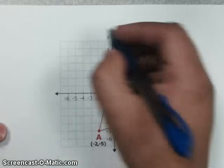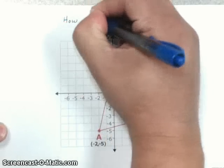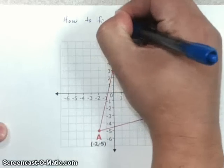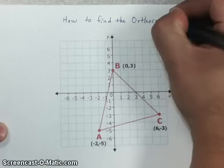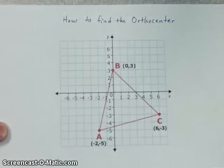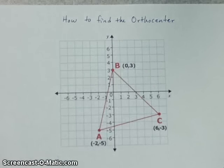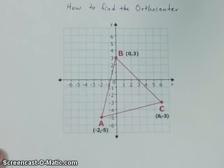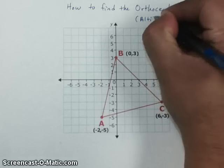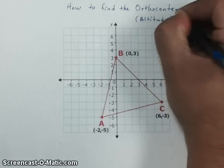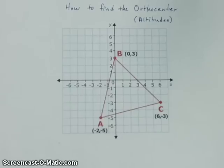Alright, for this video we're going to look at how to find the orthocenter on the coordinate plane. So we have this triangle ABC and we want to find the orthocenter. Now remember the orthocenter has to do with the altitudes of each side of the triangle.